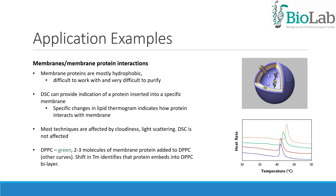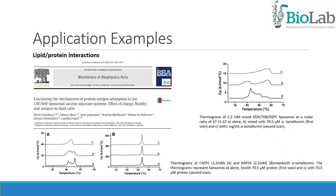In this example, 2 to 3 molecules of membrane protein were added to DPPC, shown by the green curve. The other curves are without protein. The shift in Tm identifies that the protein inserts into the DPPC bilayer. This paper is an example of lipid-protein interactions.